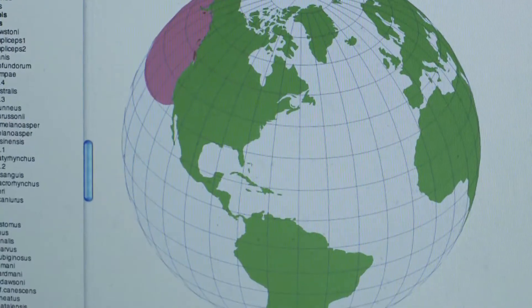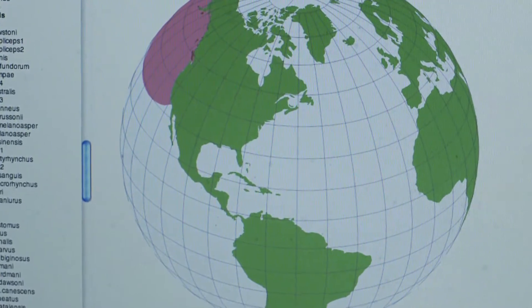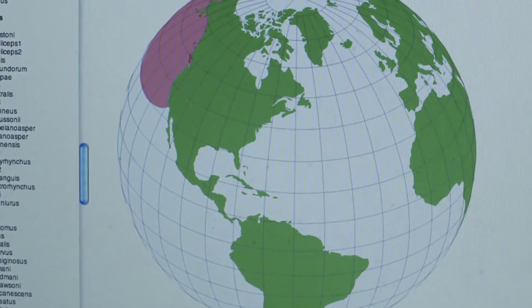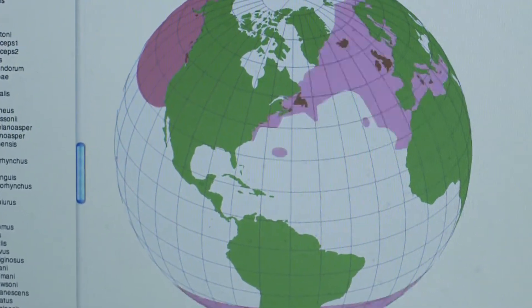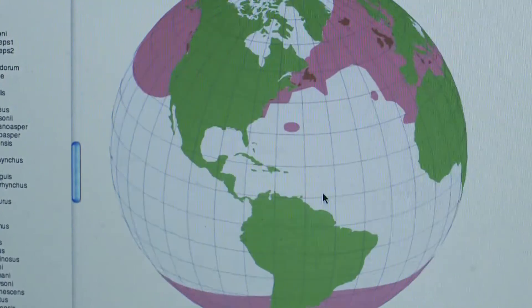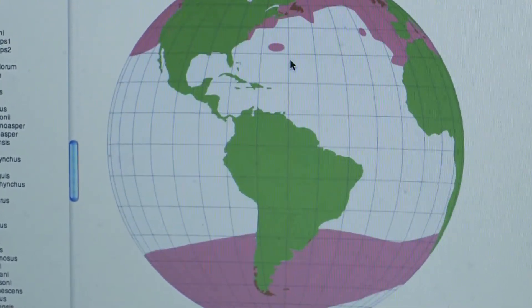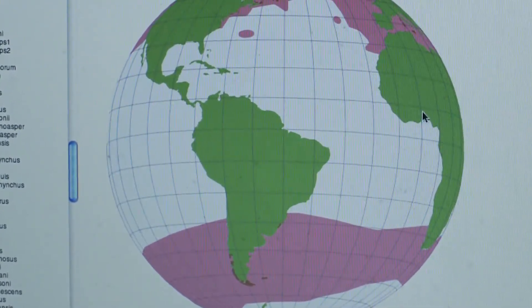We have a database which gives us the ranges of each individual, and then we can move a cursor around anywhere in the world so we can see what kind of sharks are found in any particular body of water. We're building a huge educational curriculum around the global shark tracker right now.